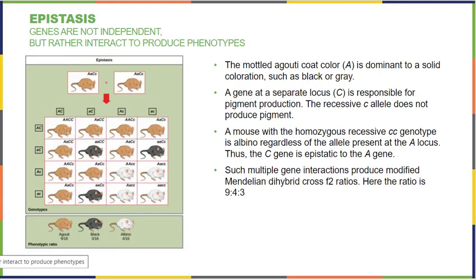Last but certainly not least, to throw one final wrench in our study of genetics, is epistasis. In epistasis, certain genes are not independent but rather interact with one another to produce certain phenotypes. The example here is coat color in mice — when you have certain mixes of genes, you end up with colors you wouldn't get without that specific proportion. Your genes don't exist in a vacuum; they often interplay and make for a very cool genetic outcome.